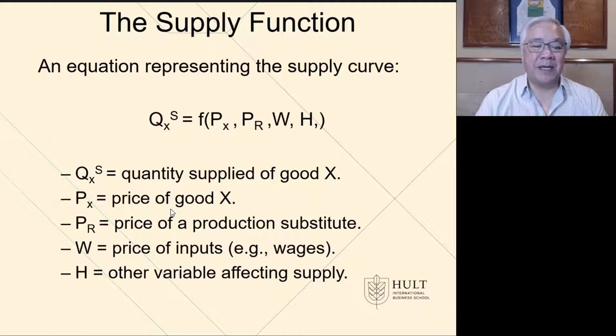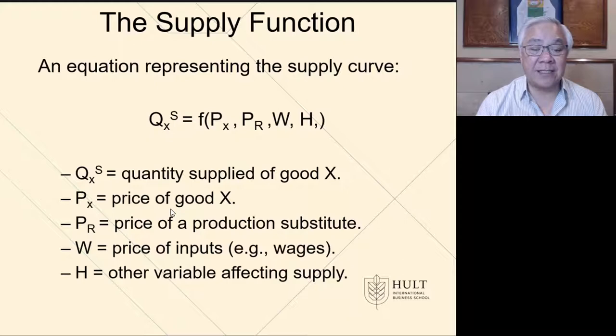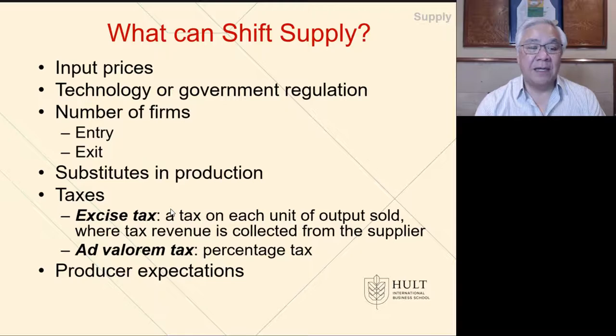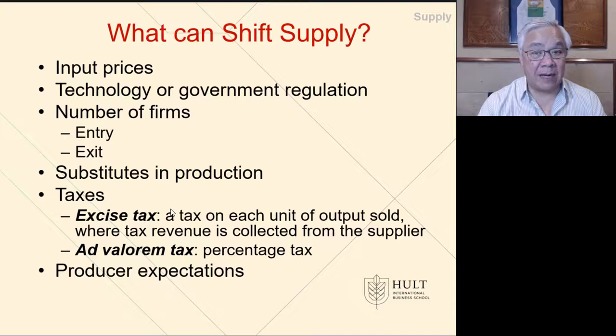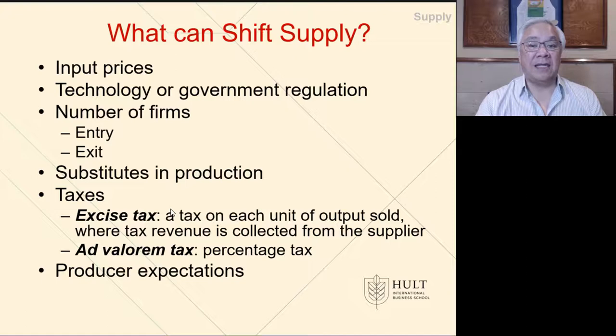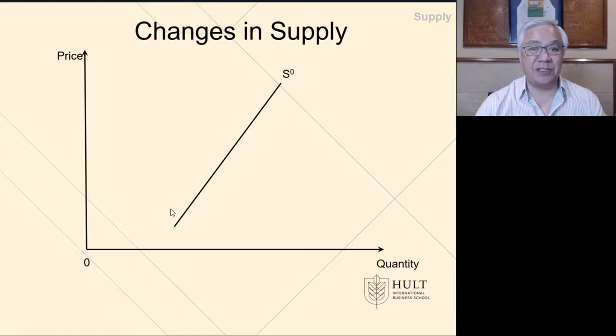The supply function looks a lot like the demand function. Be careful of the notation: the quantity of X, with superscript S for supply, equals a function of the price of good X, the price of a production substitute, the price of units of input like wages, and other variables affecting supply. This is from the standpoint of the producer, not the consumer. Factors that can shift supply include input prices, regulation, entry, substitutes, and taxes — which can include excise taxes, a fixed dollar amount per unit, or ad valorem taxes, which are a percentage. Those are two different behaviors: one is a fixed amount in units and the other is a percentage. And producer expectations.